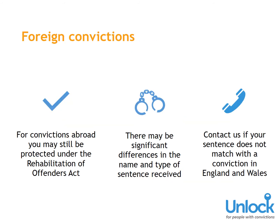Foreign Convictions: If you were convicted abroad, your conviction might still be protected by the Rehabilitation of Offenders Act. However, there are likely to be significant differences in the name of your offence and the type of sentence you received. If your sentence doesn't match with the equivalent in this country, then the Ministry of Justice should be able to advise you of the nearest equivalent.